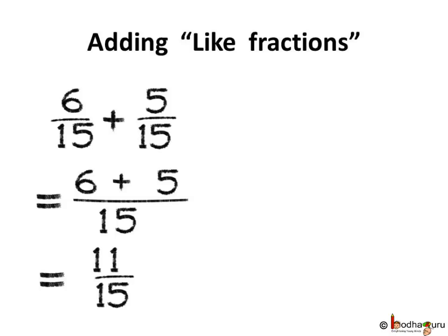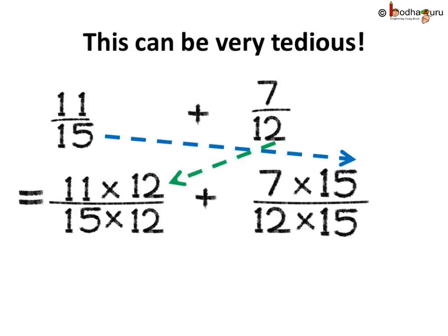Now find what is 6 by 15 plus 5 by 15. As the denominators are the same, we have made them like fractions, so we just add. We get the answer as 11 by 15. But this method of multiplying each fraction with the other's denominator to get a common denominator can be very tedious sometimes.